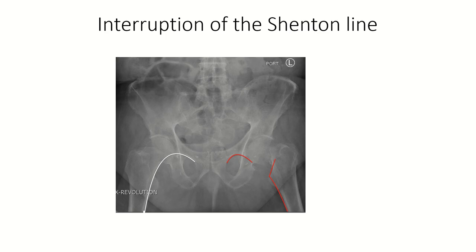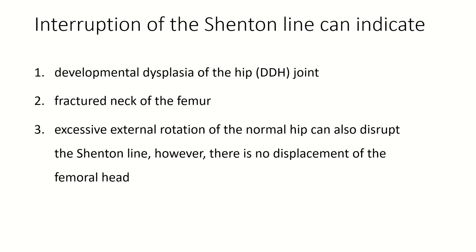Interruption of Shenton's line can be caused by: developmental dysplasia of the hip joint, fractured neck of the femur, and excessive external rotation of the normal hip. However, in the case of excessive external rotation, there is no displacement of the femoral head.